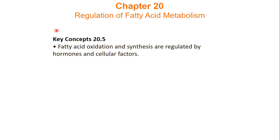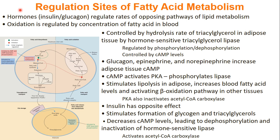In this video, we're going to look at the regulation of fatty acid metabolism. Fatty acid metabolism can be controlled via hormones, such as insulin and glucagon, similar to how glycolysis is controlled. These two hormones will regulate the rates of opposing pathways: fatty acid synthesis and beta-oxidation.